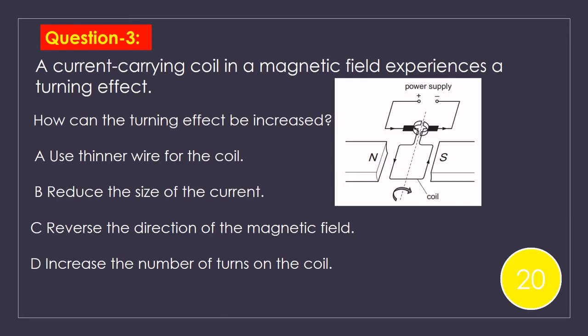Try this last question. A current carrying coil in a magnetic field experiences a turning effect. How can the turning effect be increased? Option A, use thinner wire for the coil. Option B, reduce the size of the current. Option C, reverse the direction of the magnetic field. Option D, increase the number of turns on the coil. Your time starts now.